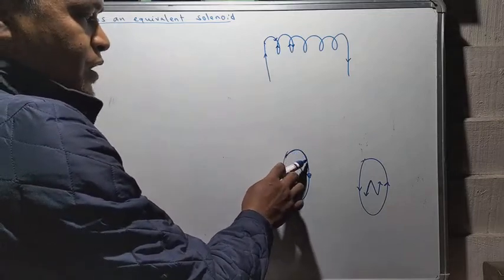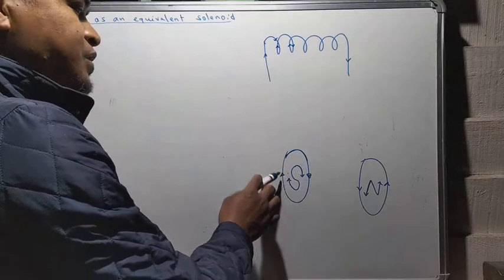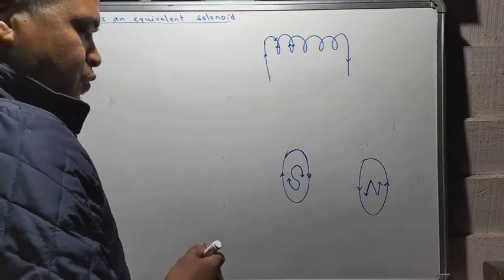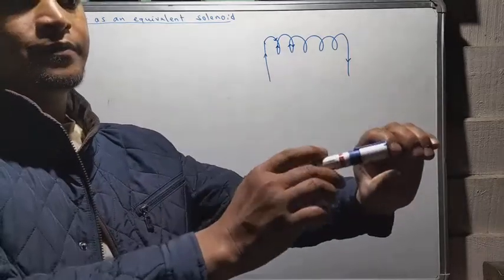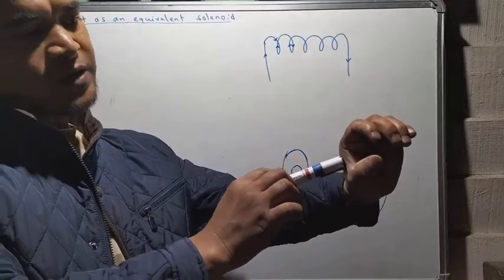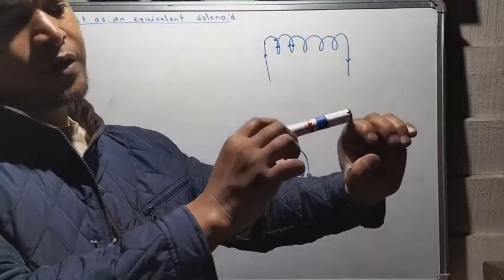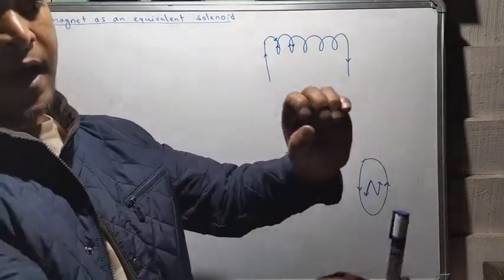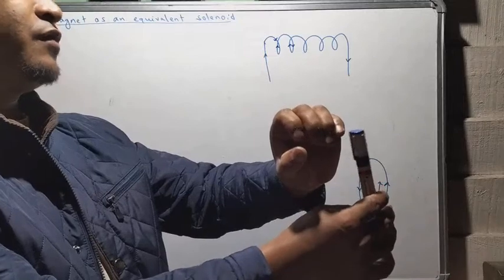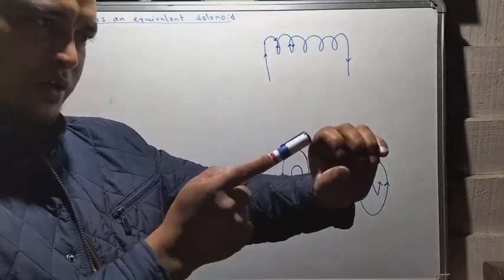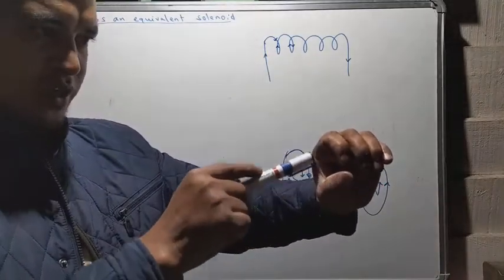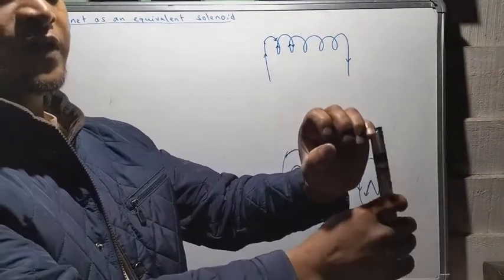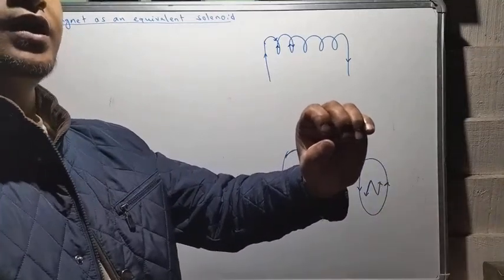If the current in the solenoid is passing in the clockwise direction, then this face of the coil will behave like a south pole and the face at the other end of the coil will behave like a north pole.